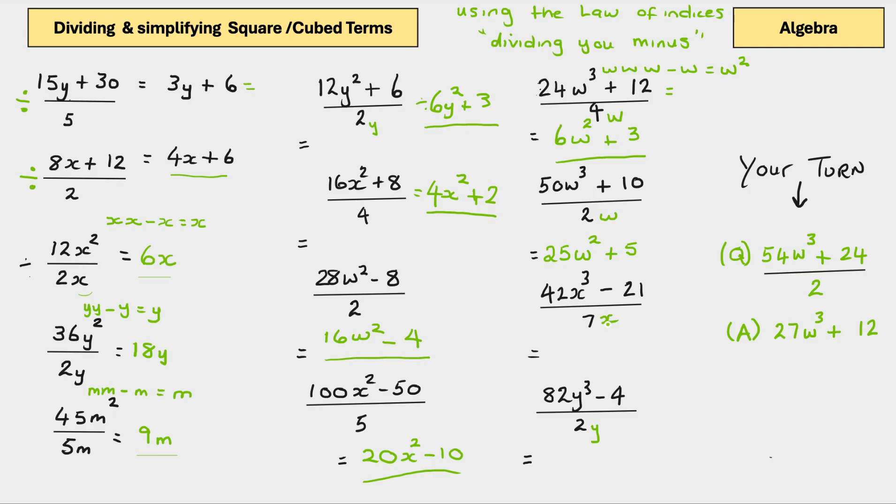Another one. 42x cubed minus 21 divided by 7x. 7s into 42 goes 6 times. X cubed minus x. Another way of doing it is cross that off. Cross that out. And then that becomes x squared. That's 6x squared minus 7 divided by 21 equals 3.